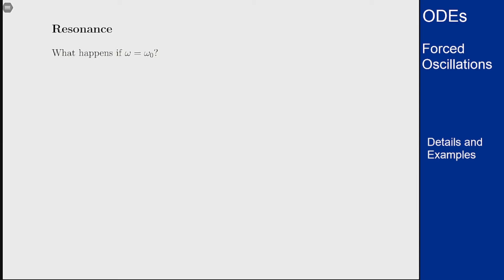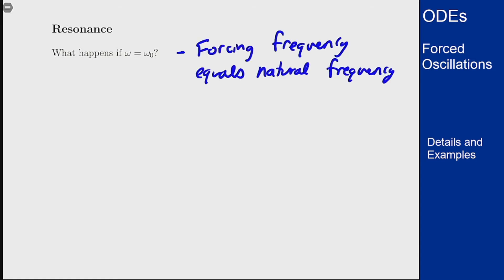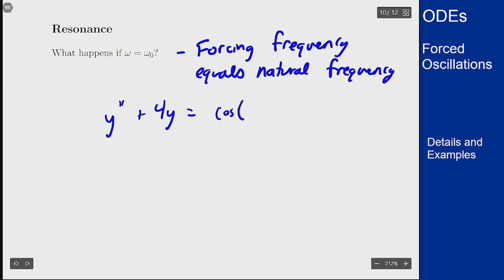In this video we'll deal with the last situation for undamped forced oscillations, and that is resonance. This is the issue that comes up when omega equals omega zero, or when the forcing frequency equals the natural frequency. As an example, this is something like the situation of y'' + 4y = cos(2t).